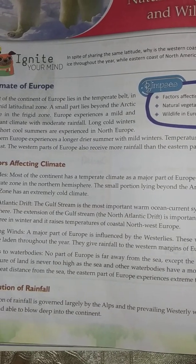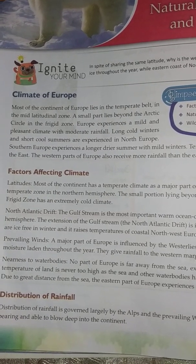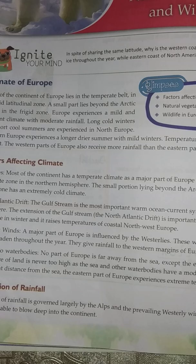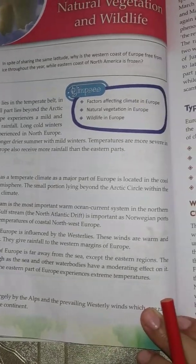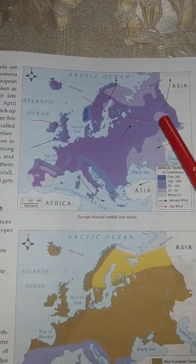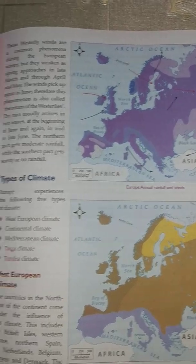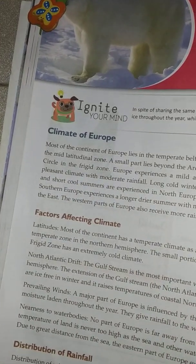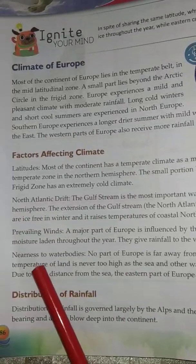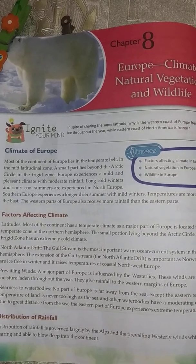Because of this warm ocean current that blows in the northern hemisphere, the Norwegian ports remain ice-free, so loading and unloading of cargo at Norwegian ports is quite easy. Next is the prevailing winds. A major part of Europe is influenced by the westerlies - the winds that blow from the western direction - and they are responsible for bringing rainfall to the western margins of Europe. These westerly winds are warm and moisture-laden throughout the year.